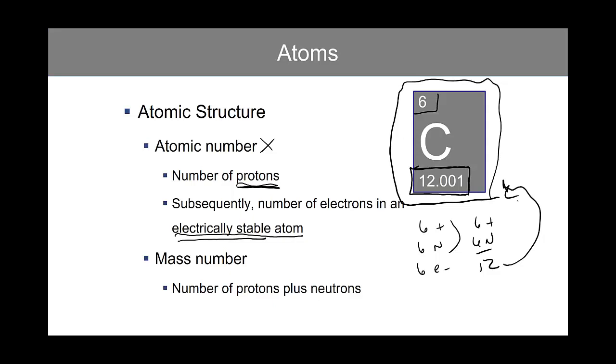Sometimes we find atoms of carbon that have more than six neutrons. Some atoms of carbon will have six protons, seven neutrons, and six electrons.